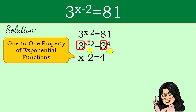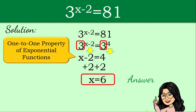Those are the exponents of our given base. What we are looking for is the value of x. So we eliminate negative 2 by using the addition property of equality — adding 2 to both sides of our equation. We cancel negative 2 on the left side, leaving x, and we add 4 and 2 on the right side to get x is equal to 6.